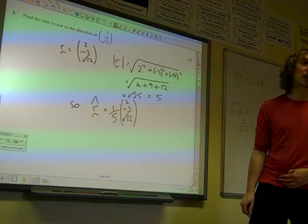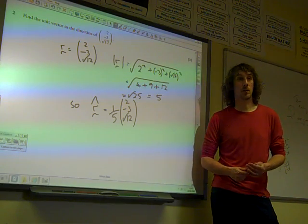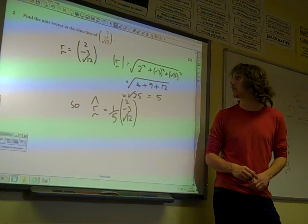If you want to take the fifth inside and write 2 fifths, minus 3 fifths, root 12 fifths, you can do. That's it. Three marks.